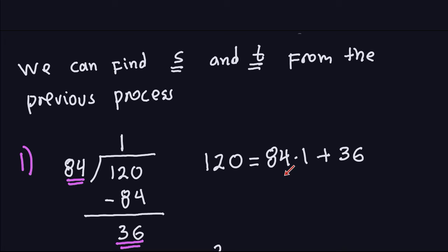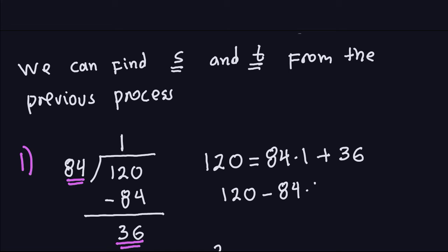The first thing you want to do is rewrite this equation in another way. You always want to solve for the remainder — isolate the 36. So subtracting 84 times 1, and leaving it indicated without performing the operation, gives us: 120 minus 84 times 1 equals 36. This is an important equation we'll use later, so mark it down.